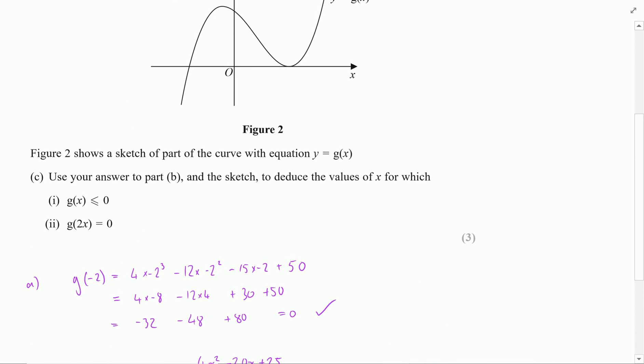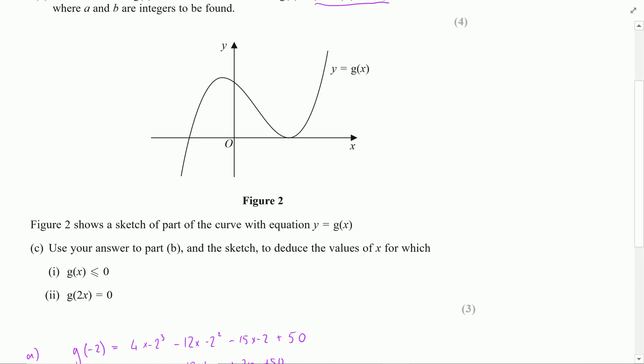Now moving on to the next part, I want to use our answer for part b. So our answer for part b which was x plus 2 and 2x minus 5 all squared so that I know that the graph here,